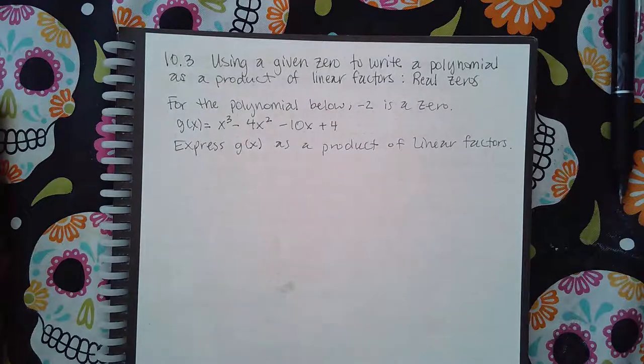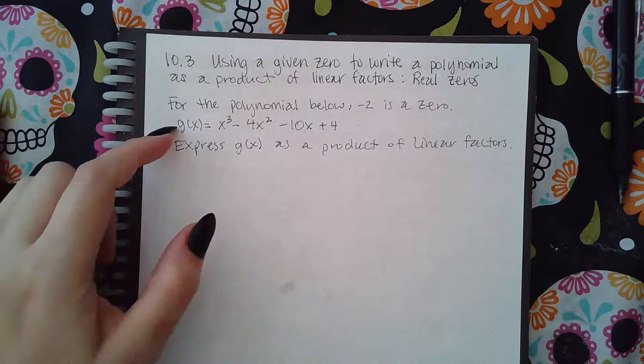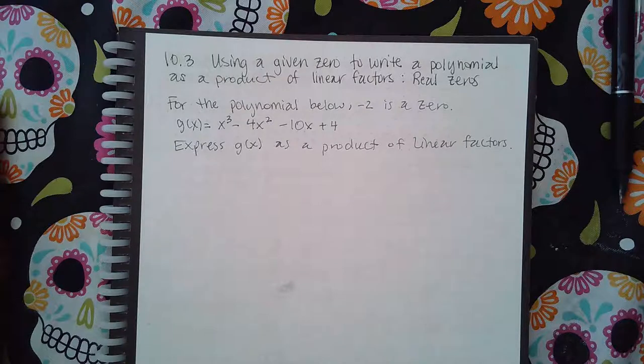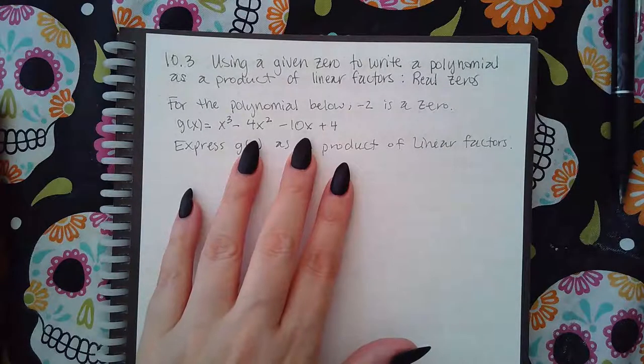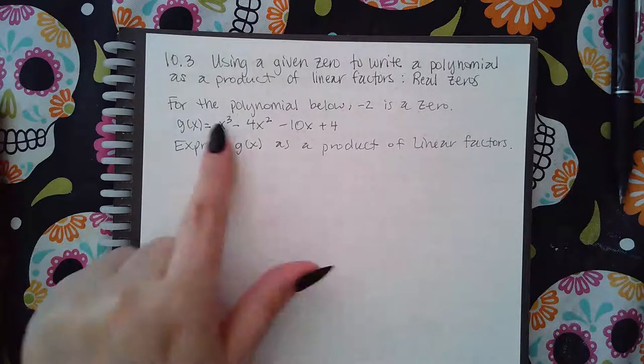So what I've got to do is use this zero to factor g(x). And then once I know what it looks like factored, then I can continue to factor the rest of it. Because if you look at this, you will not be able to factor this using grouping. It just won't be able to factor using grouping.